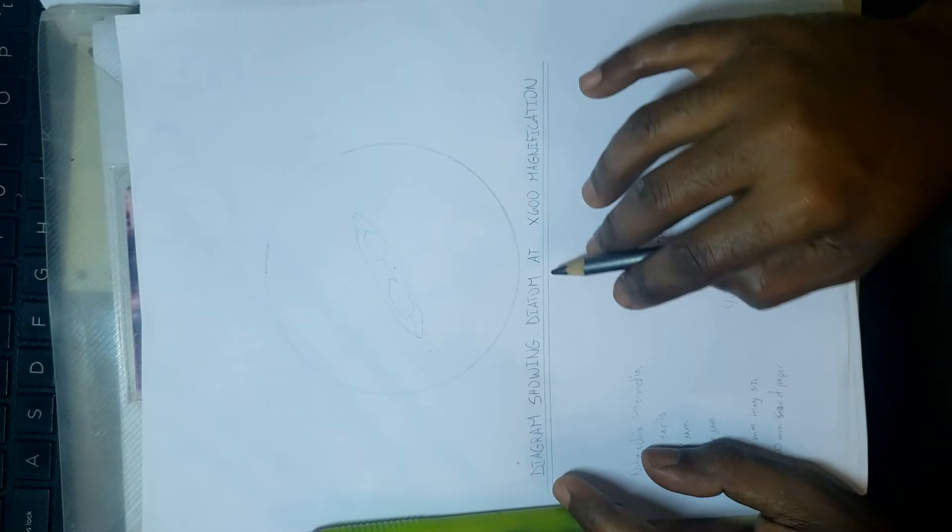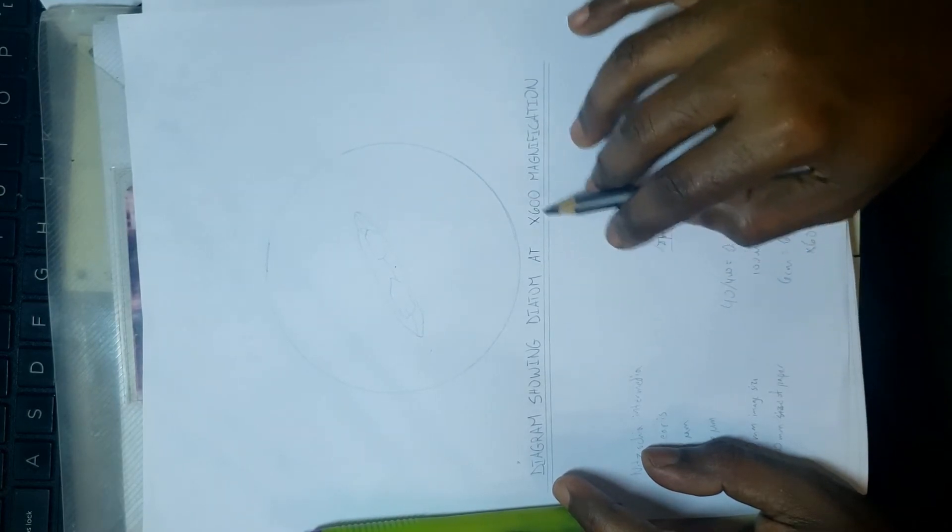A proper diagram, we have it here. Any labelings you would have labeled to the right, and then your title: diagram showing diatom at times 600 magnification.